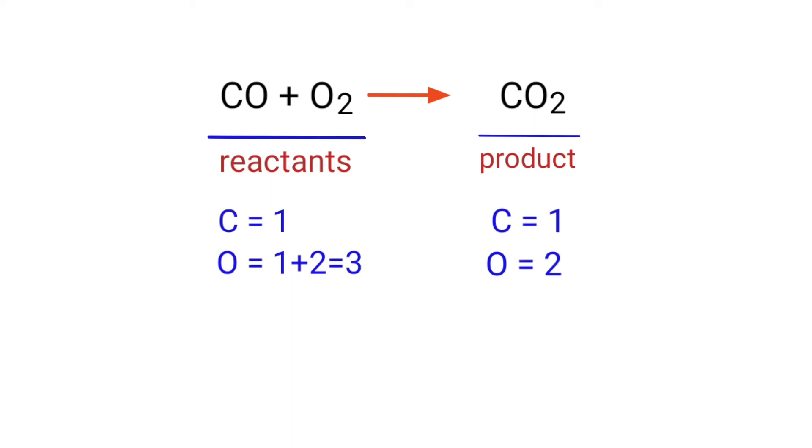The number of atoms are not balanced on both sides. To balance the chemical equation, we need to make use of coefficients. A coefficient is a number that we place in front of a chemical formula.